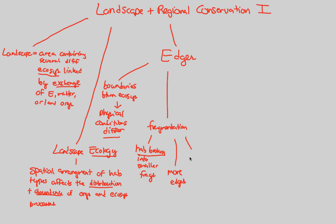The best way to imagine this is to think of a rectangle. As you draw rectangles within rectangles to represent fragmented habitats, each point at which you have an edge represents two ecosystems interacting, exchanging energy, matter, and organisms. The physical conditions on one side of the edge certainly differ from those on the other side, because of the spatial arrangement and the distribution and abundance of organisms in those two separate areas.